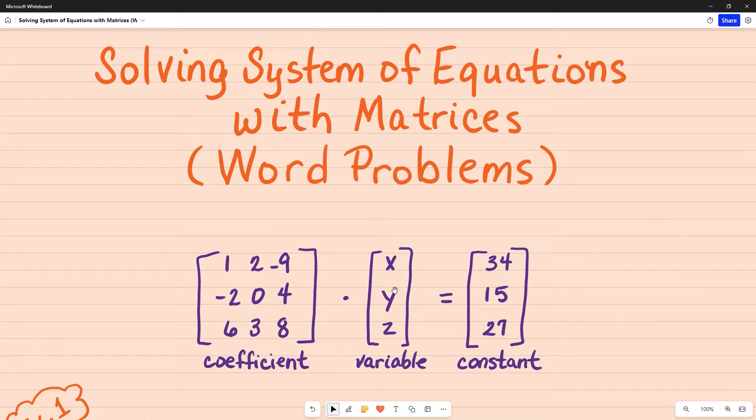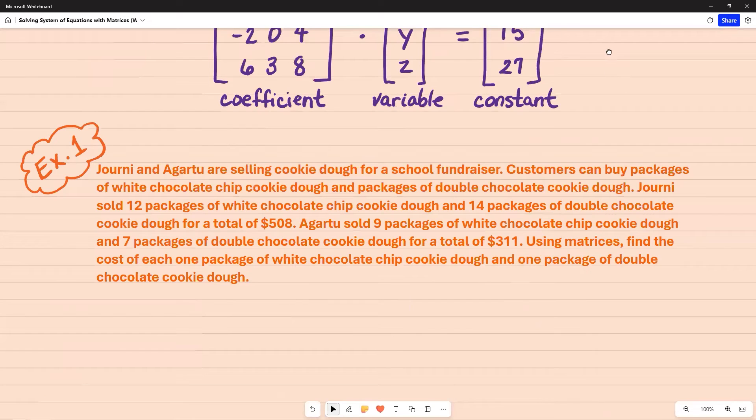This is a 3 by 3 times the variable, which if it were 2 by 2, it would be x, y. And in this case, since it's 3 by 3, it's going to be x, y, z. And then you want to set it equal to the constant matrix.